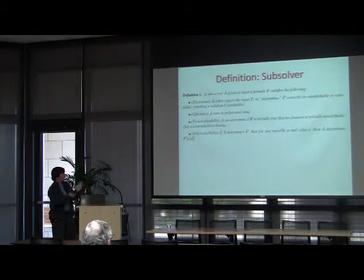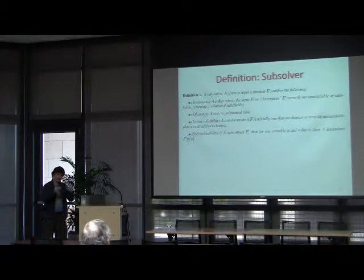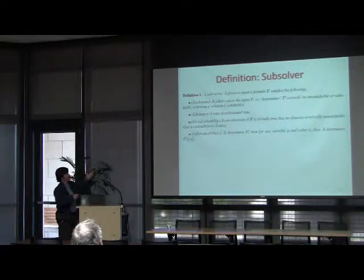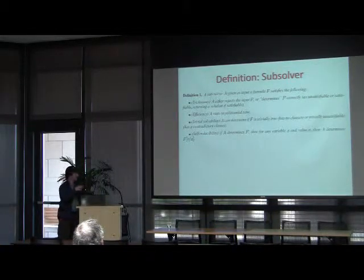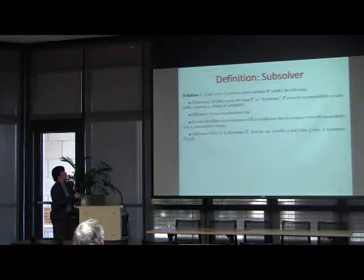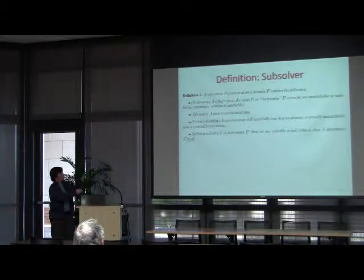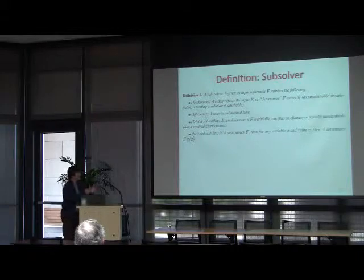A sub-solver A, given a formula as input, satisfies the following properties: it either rejects the input (saying 'I don't know'), or it correctly determines it as unsatisfiable or satisfiable — returning a satisfying assignment if SAT, and if it says UNSAT, you can prove it actually is UNSAT. It must run in polynomial time and satisfy basic criteria: it can determine if a formula is trivially true (no clauses) or trivially unsatisfiable (has an empty/contradictory clause).